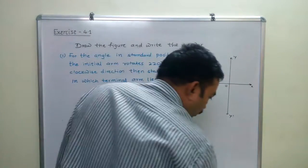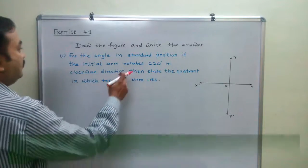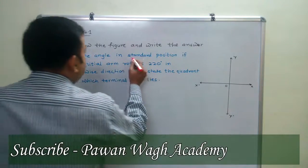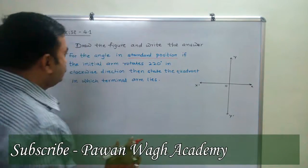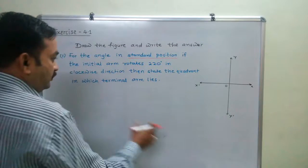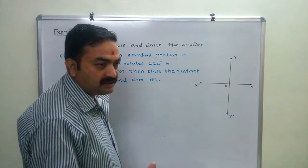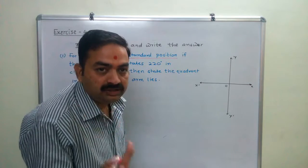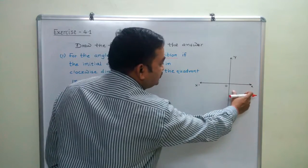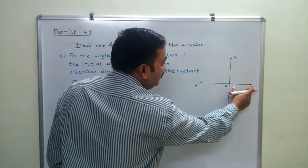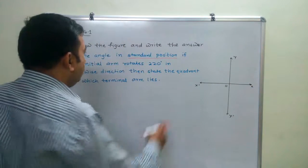Now, what is given in the question? The angle is in the standard position, so we draw the x and y axes. Angle in the standard position means the initial arm of the angle should be the positive x-axis. This positive x-axis is the initial arm for the given angle.